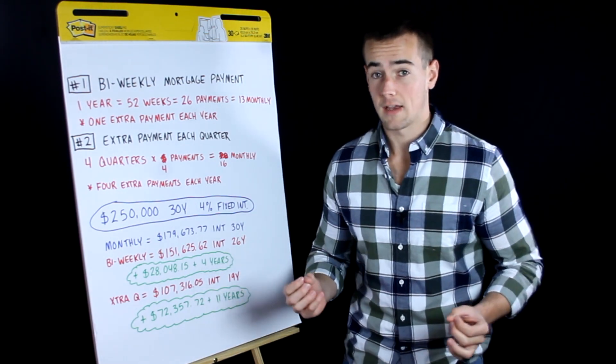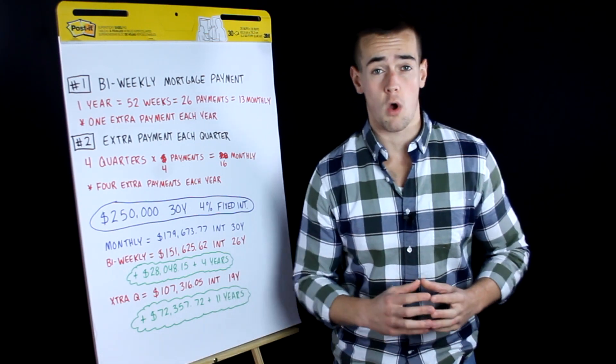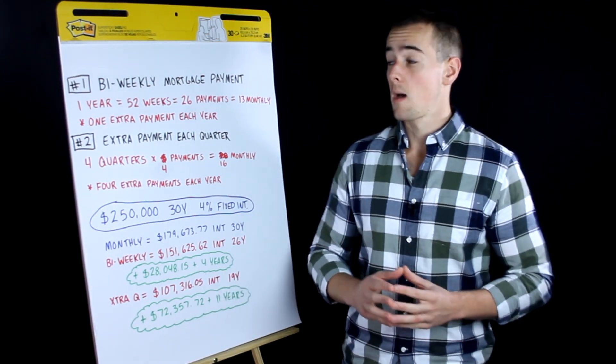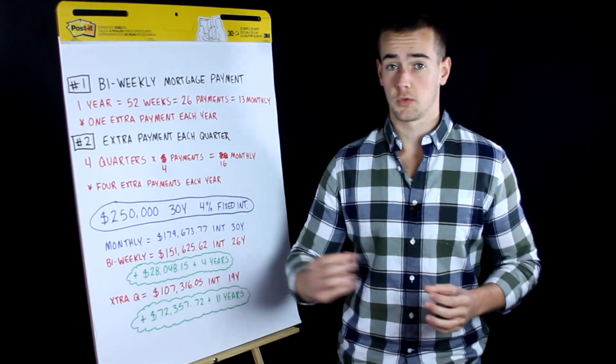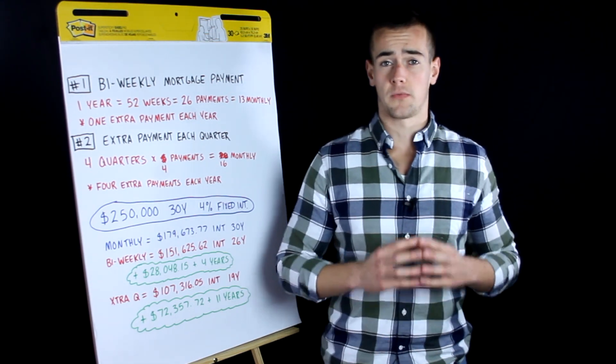Today I'm going to show you guys how to take anywhere from four to eleven years off of your thirty-year mortgage payment by following one of these two strategies right here. And they are very simple strategies to follow.